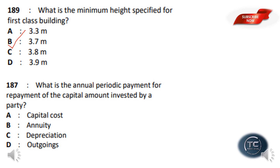What is the annual periodic payment for repayment of the capital amount invested by a party? The options are: capital costs, annuity, depreciation, outgoings. The answer is Option B — Annuity.